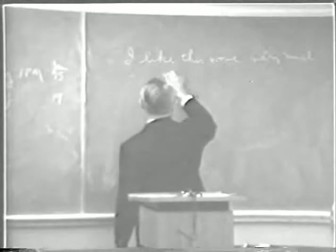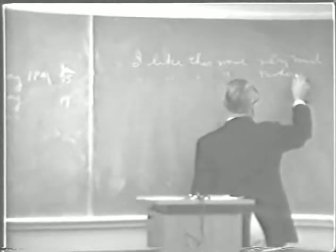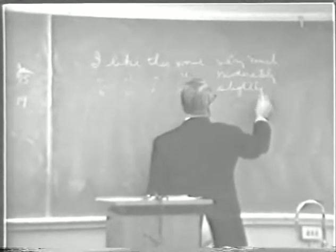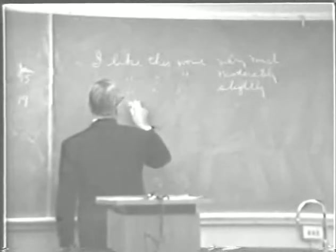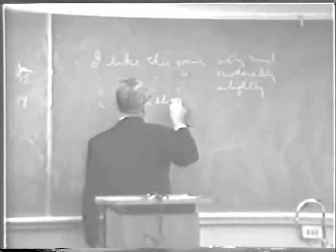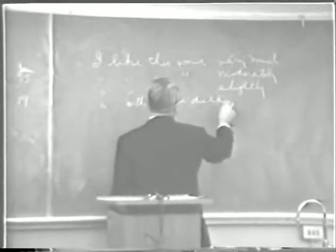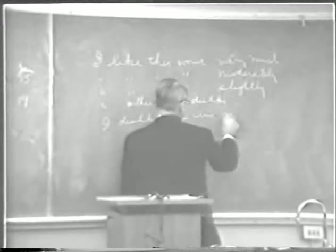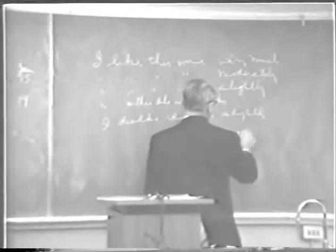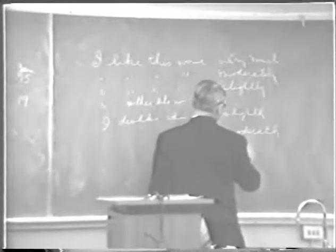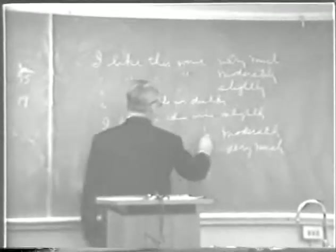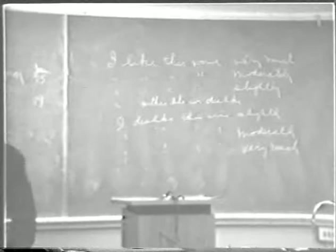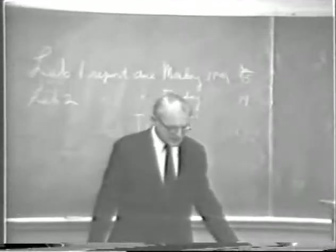You ask people how much they like or dislike the wine. The hedonic scorecard looks something like this—we'll make a seven-step one: 'I like this wine very much,' 'I like this wine moderately,' 'I like this wine slightly,' 'I neither like nor dislike this wine,' 'I dislike this wine slightly,' 'I dislike this wine moderately,' 'I dislike this wine very much.' That's a balanced hedonic scorecard with as many steps on the like side as on the dislike side.